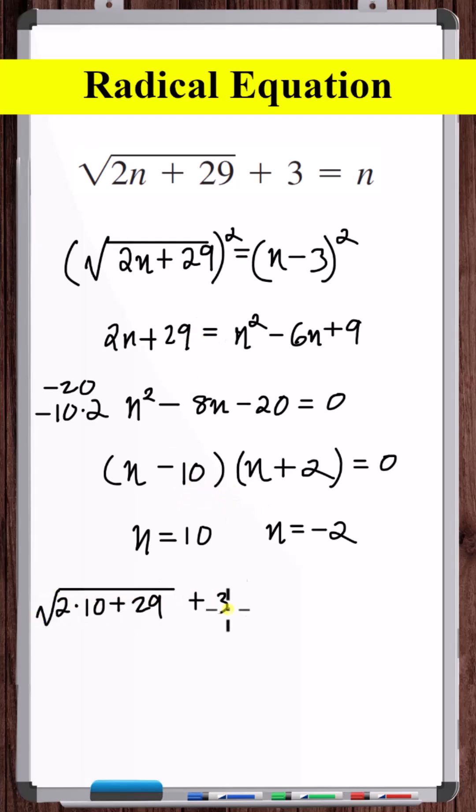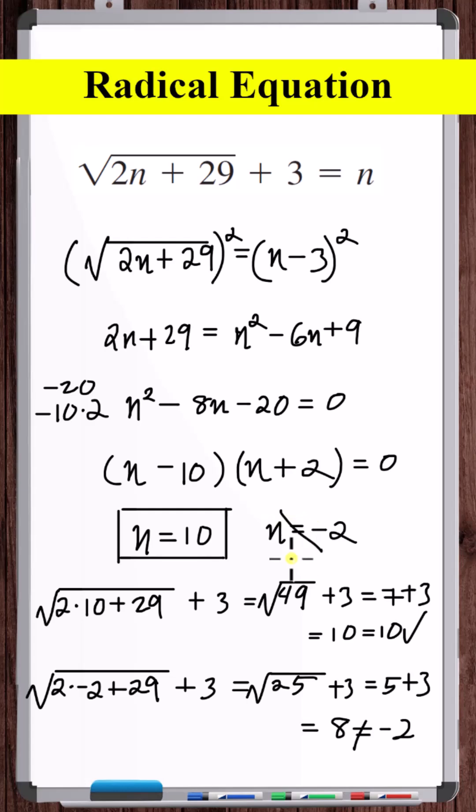So let's check n is equal to 10. So 10 is a solution. Now let's check n is equal to minus 2. So n is equal to minus 2 is not a solution. The only solution is n is equal to 10.